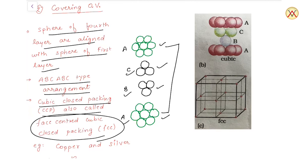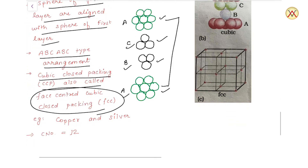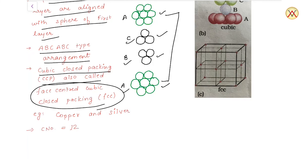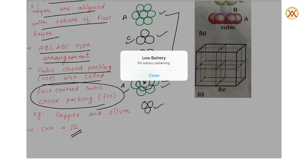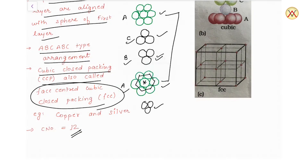The coordination number of CCP is also 12 — 6 balls touch the central ball in the same layer, 3 from above, and 3 from below. Copper and silver show this type of arrangement in nature. Thank you.